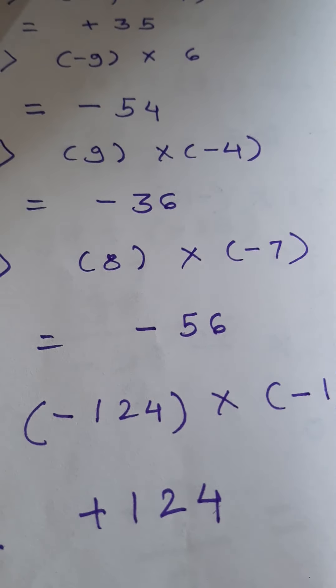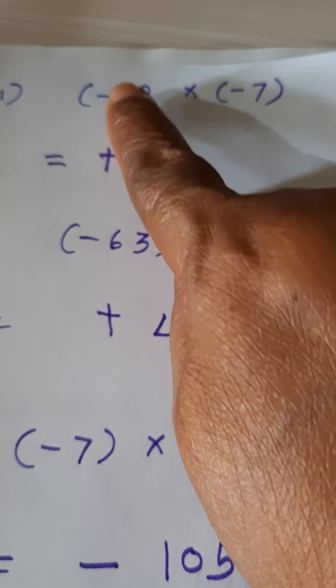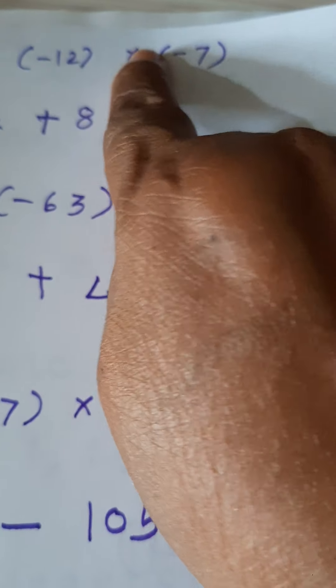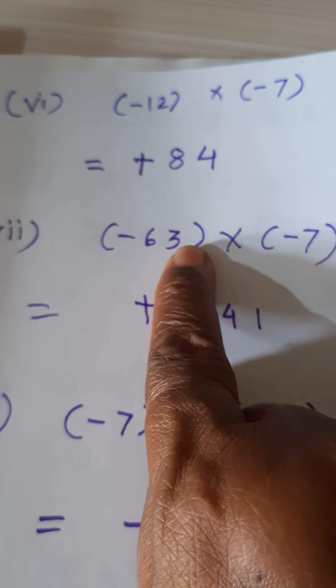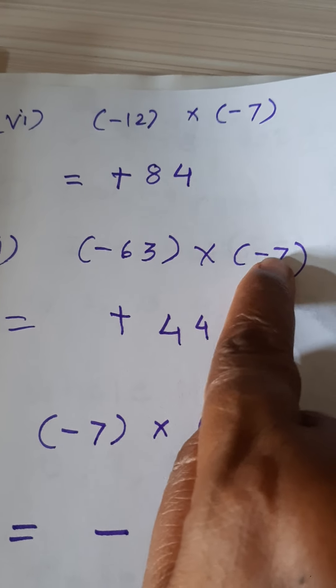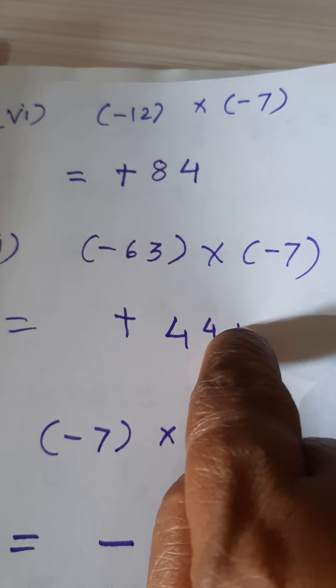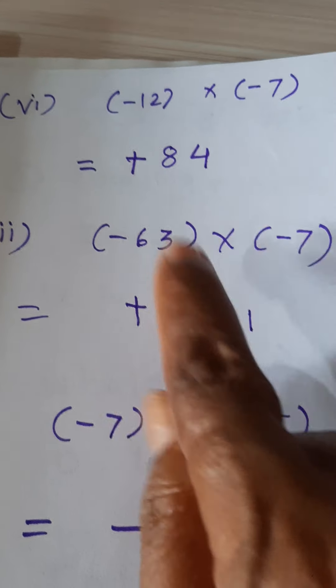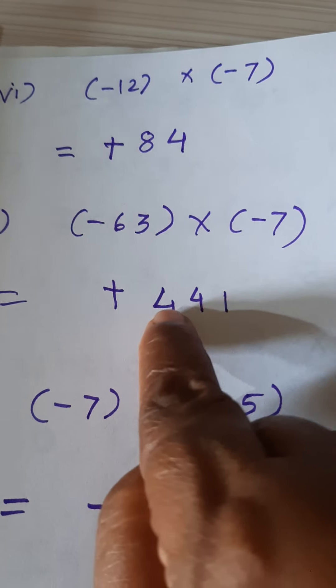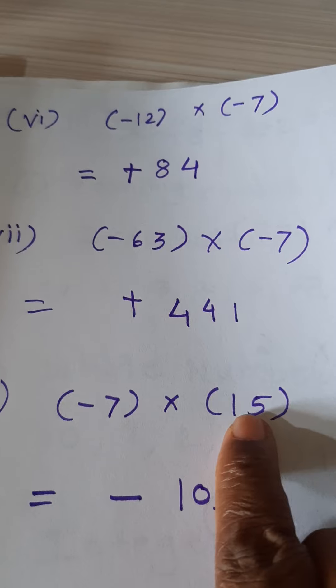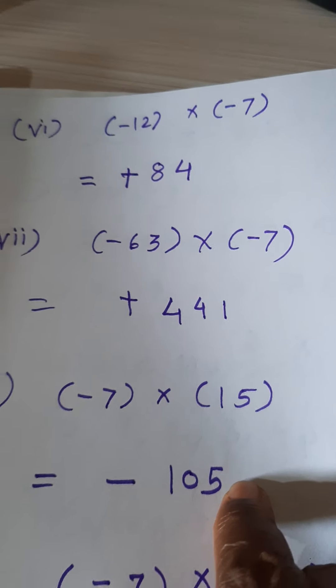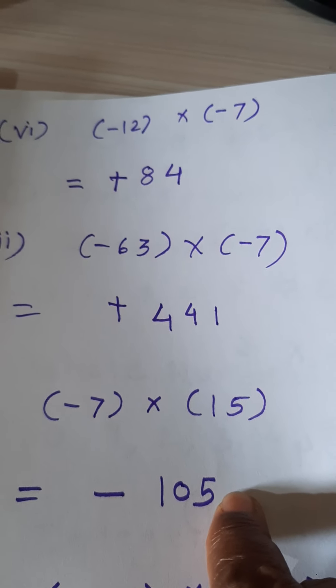Fifth example: negative 124 multiplied by negative 1. 124 × 1 = 124. But here negative into negative is positive, so the answer is positive 124. Sixth example: negative 12 into negative 7 — negative into negative is positive, 12 × 7 = 84, so positive 84. Seventh example: negative 63 multiplied by negative 7. 7 × 3 = 21, carry 2; 7 × 6 = 42 + 2 = 44. Negative into negative is positive — answer is positive 441.